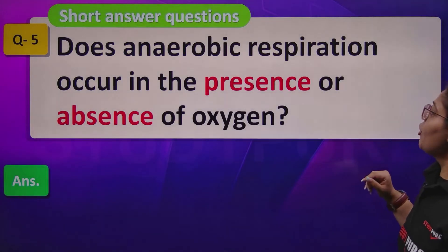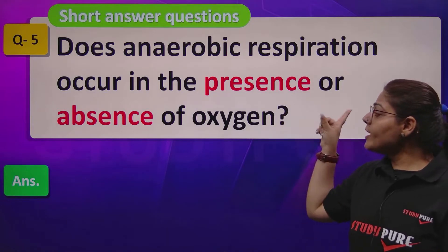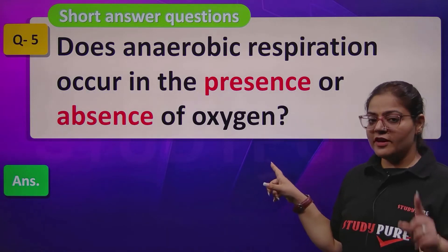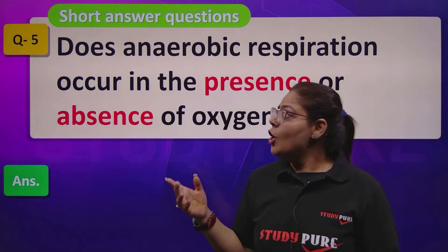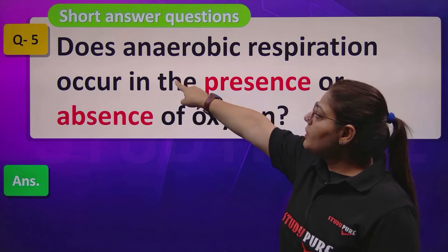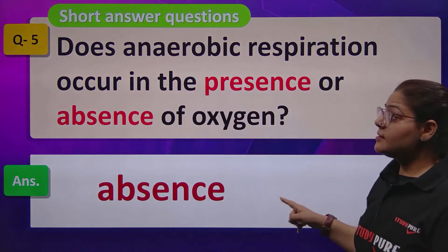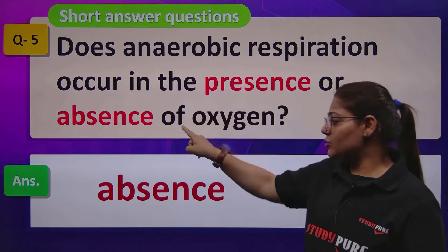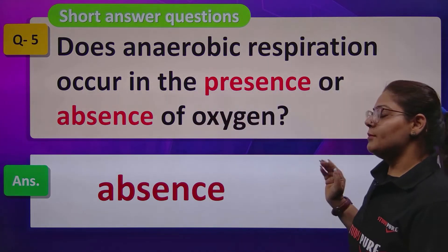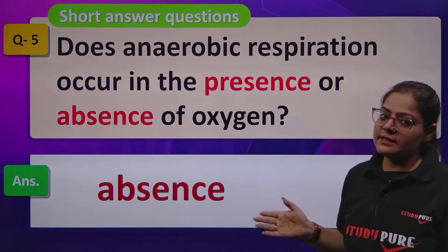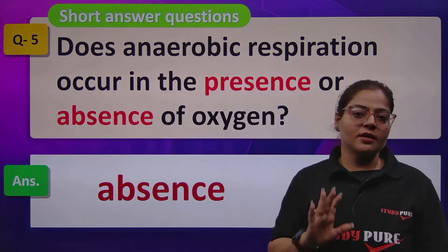Does anaerobic respiration occur in the presence or absence of oxygen? We just discussed this — aerobic respiration happens in the presence of oxygen, and anaerobic respiration happens in the absence of oxygen. So the correct answer is: anaerobic respiration always occurs in the absence of oxygen. We have read about the organisms where this happens, including situations involving the human body.